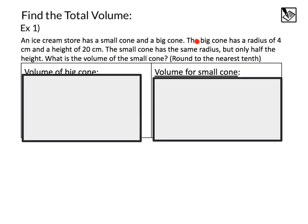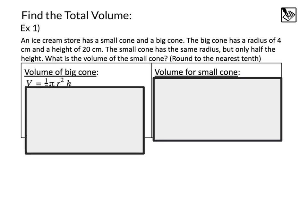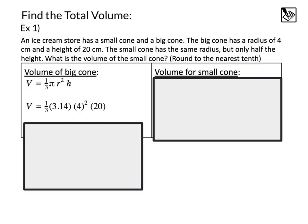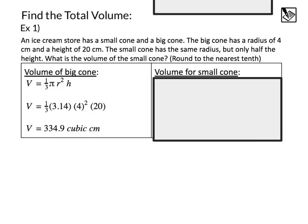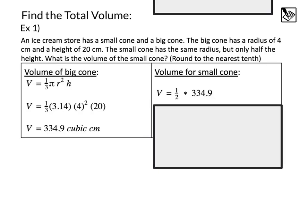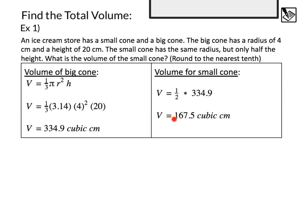An ice cream store has a small cone and a big cone. The big cone has a radius of 4 centimeters and a height of 20 centimeters. The small cone has the same radius but only half the height. What is the volume of the small cone? One way is we can find the volume of the big cone using the formula for a cone and substituting what we know: pi 3.14, our radius is 4, and our height is 20. From there, we know the volume for the small cone is going to be half the volume of the big cone. So we can take that volume, multiply it by one-half, divide by 2, and that gives us our final volume of the small cone. Now certainly you could have also just said, I know half my height is 10 and use that to find it directly. But the main point is if we know a total volume and want a part of it, we can multiply it by the fraction.